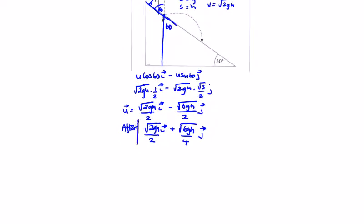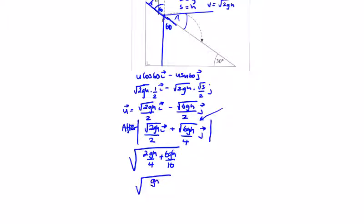We get the magnitude of the post-impact velocity. Squaring both components: 2gh/4 plus 6gh/16. That gives us 4gh/8 plus 3gh/8, which is the square root of 7gh/8. That is the magnitude of the velocity after impact.